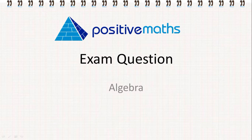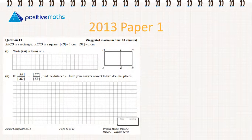In this video for positive maths we're going to look at an exam question revolving around algebra. So ABCD is a rectangle, AEFD is a square. They tell us AD is 1 centimeter and DC is x centimeters. We need to write EB in terms of x.